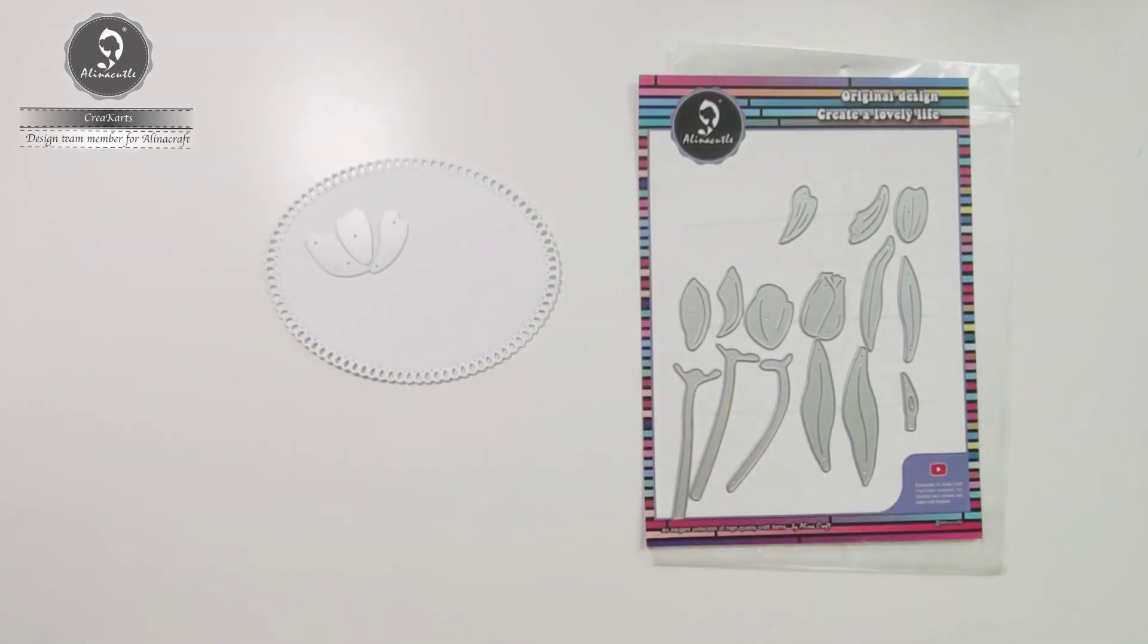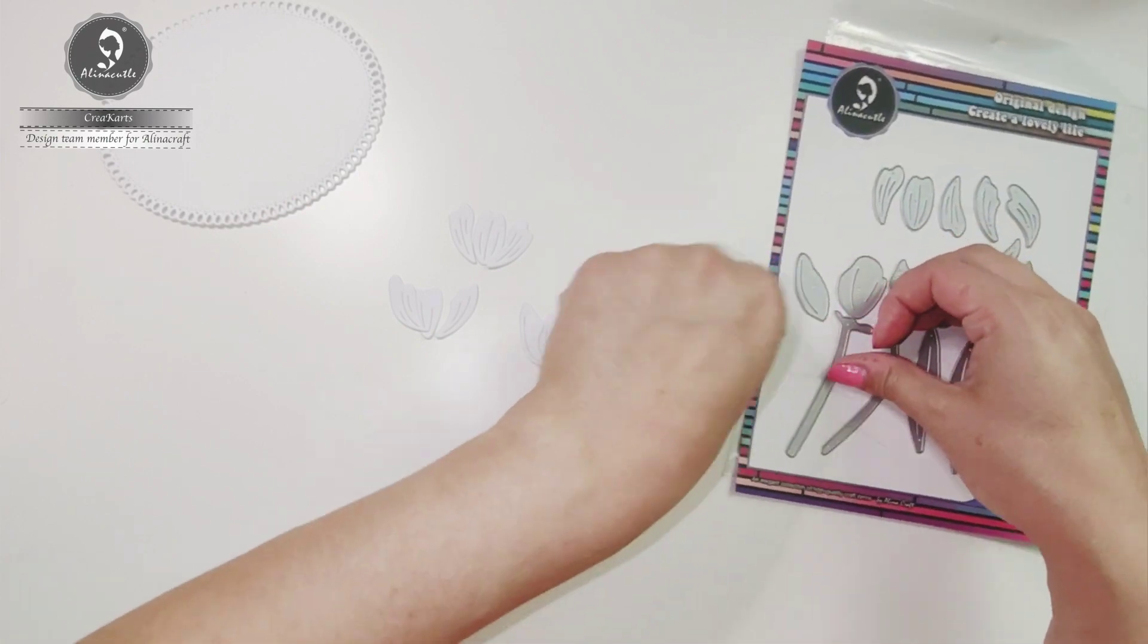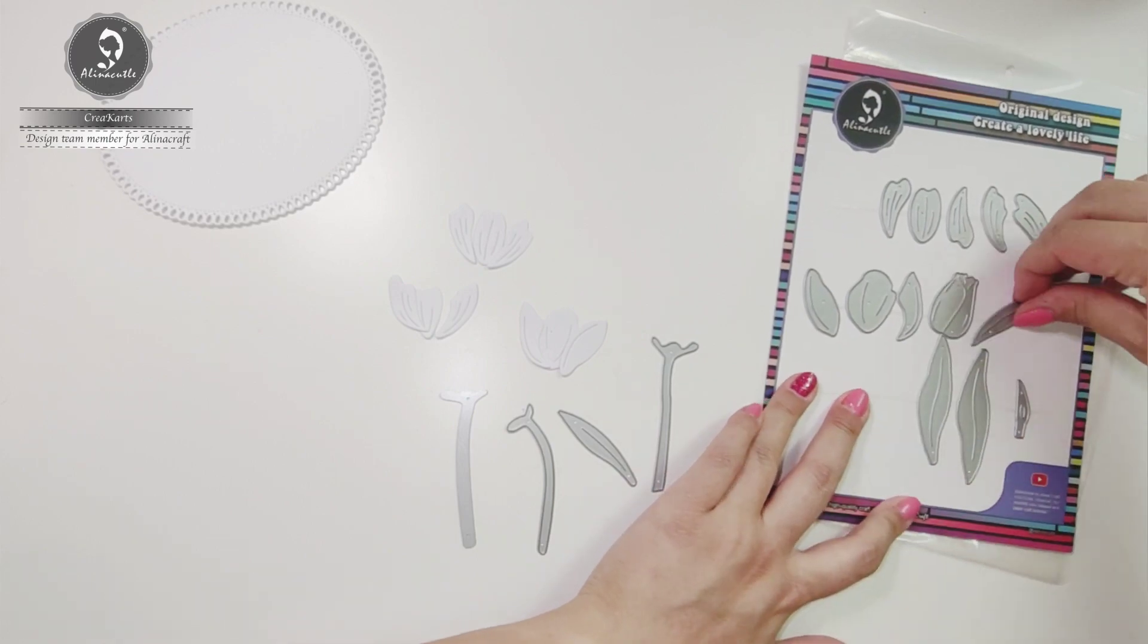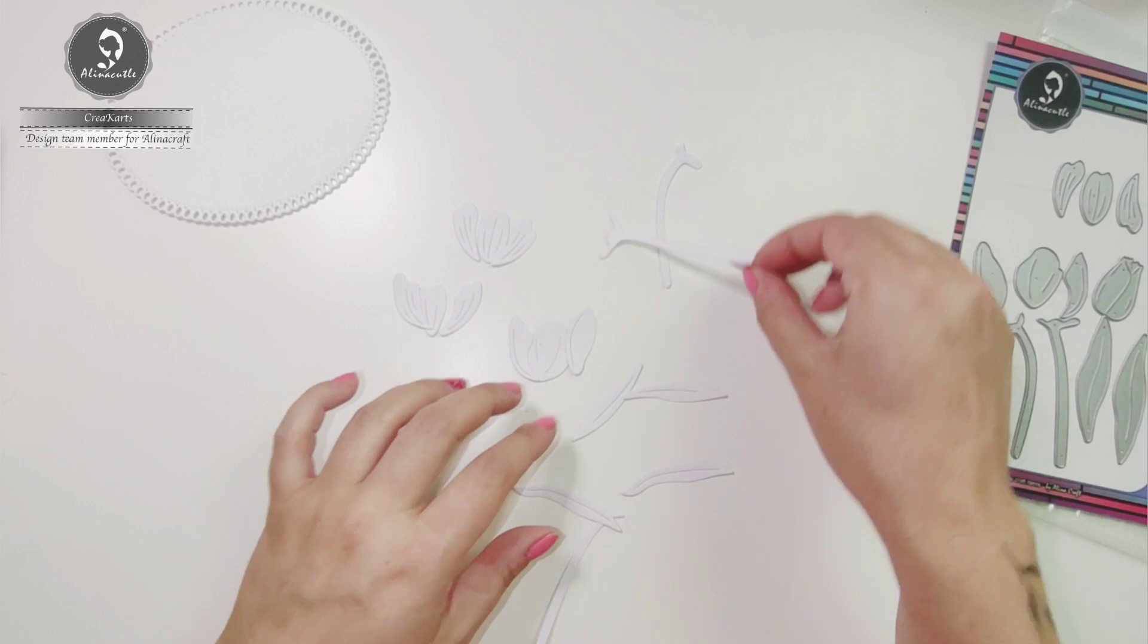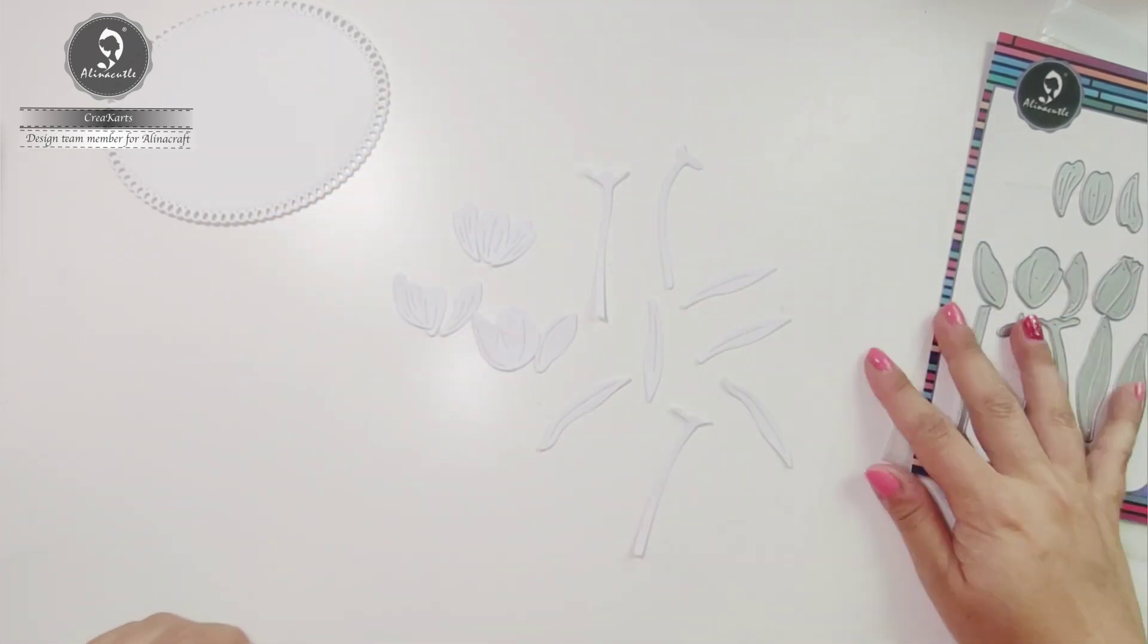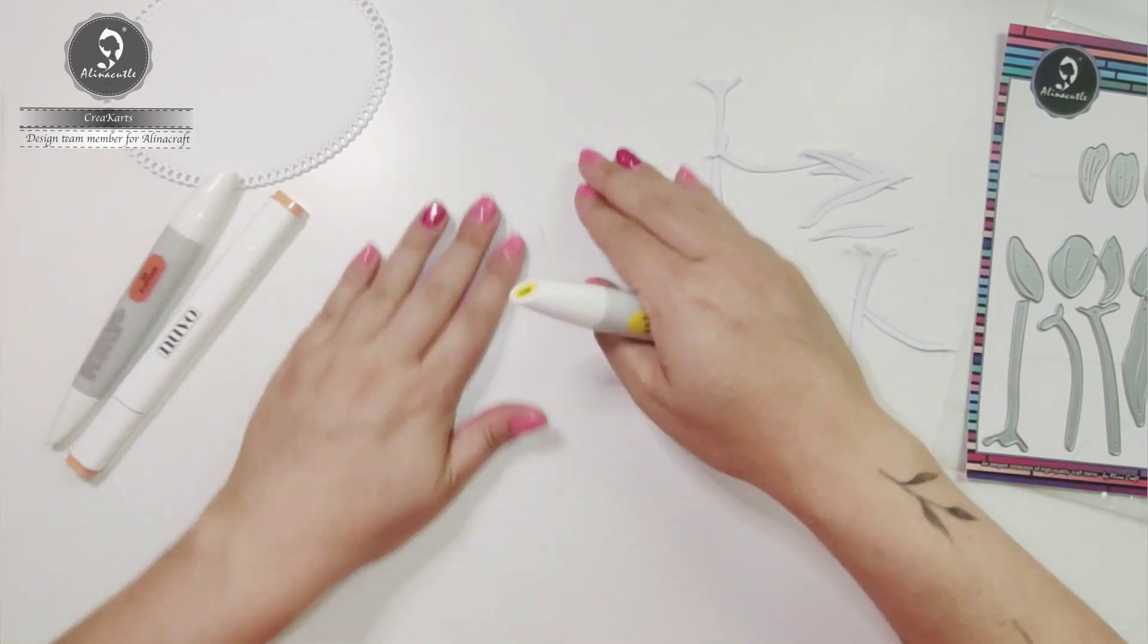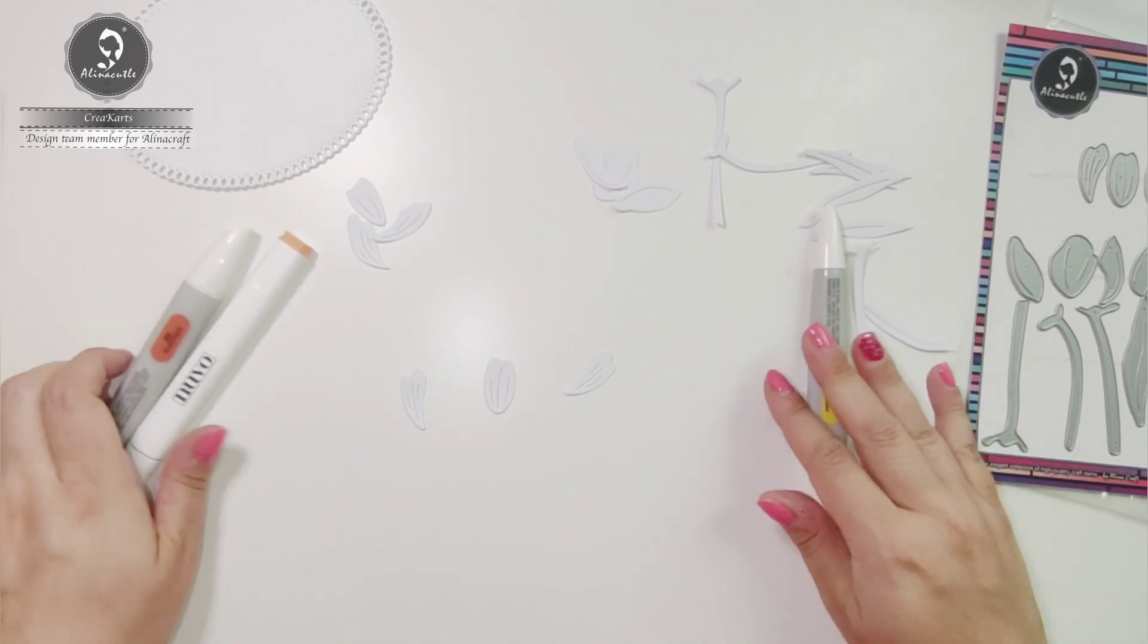I'm going to use alcohol marker paper to color the tulips with my alcohol markers. I'm going to use three different colors to color my tulips, and for each tulip I'm going to use one different color.